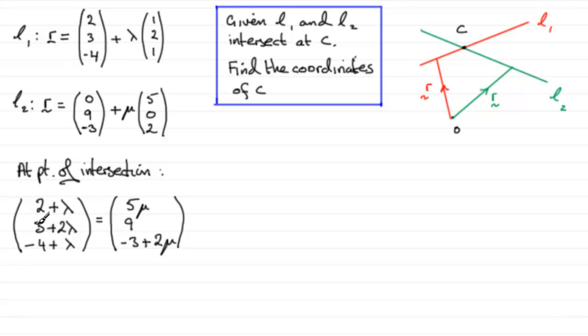And it's got to be the J component here because we've just got one unknown, lambda. So, I can say that if I equate or compare the J component, then the equation that I get is going to be three plus two lambda equals nine.